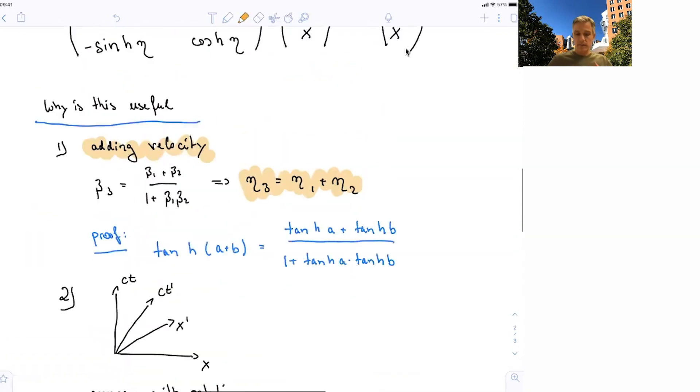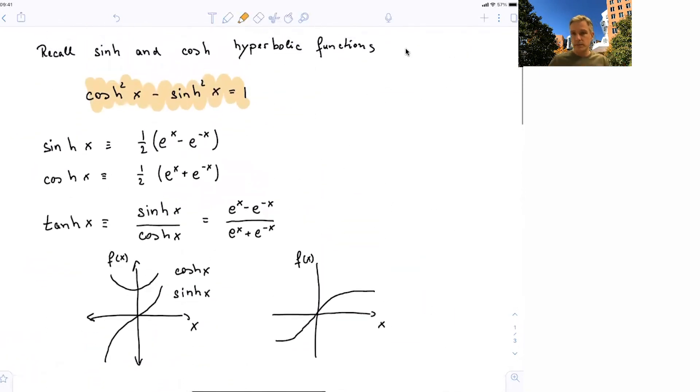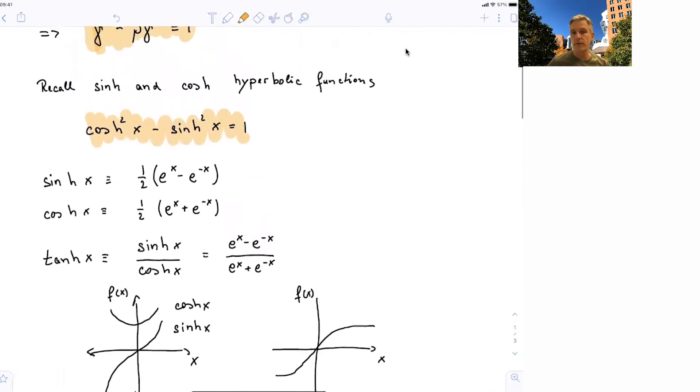So we have just relabeled things. But now we can make use of everything we know about hyperbolic functions when we think about adding velocities. Because the rapidity, the relative distance in speed between two reference frames, is basically the angle of the hyperbolic angle.